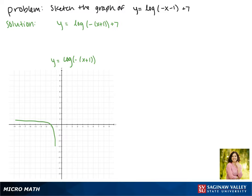Lastly we're adding 7. This shifts our function up 7 spaces, so that now it passes through the point negative 2, 7. Notice that the asymptote shifted along with our function. Now this is the graph of our function.